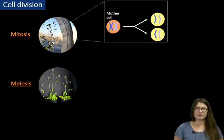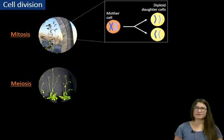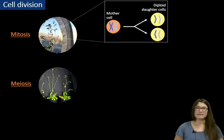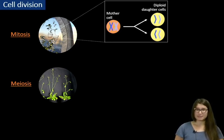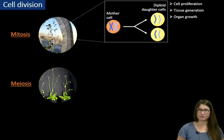During mitosis, the homolog chromosome pairs align in the middle of the mother cell. Then the sister chromatids separate and are enveloped by a newly formed plasma membrane of two daughter cells. In the end, the two daughter cells are diploid. They contain the same genetic background as the mother cell. Mitosis is responsible for cell proliferation and therefore tissue generation and organ growth.